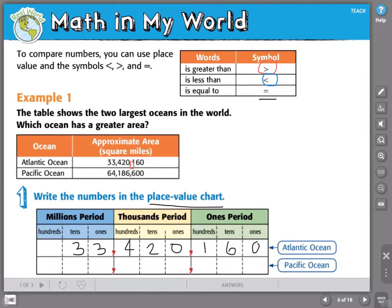Now, let's do the same thing for the Pacific Ocean. My ones period, 600. My thousands period, 186. And my millions period, 64.